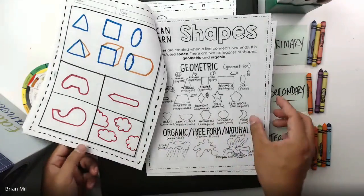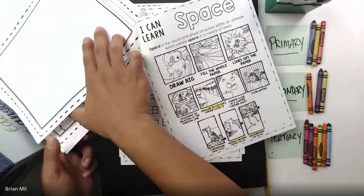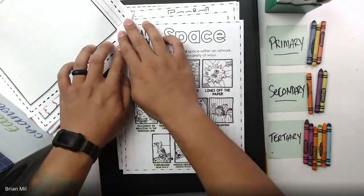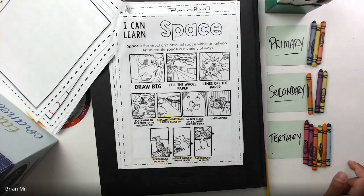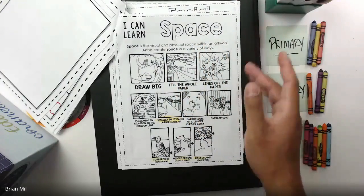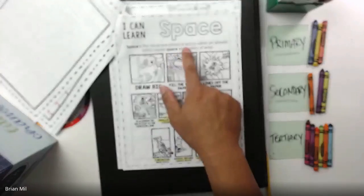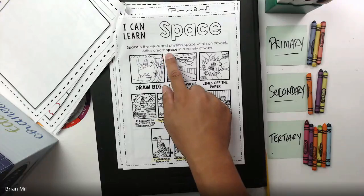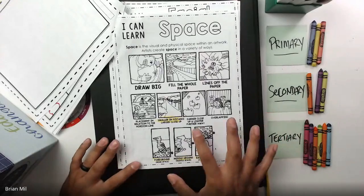What we're going to do today is flip over to the next page. It should say 'I can learn space.' Flip to this page right now. I'm going to talk about every single one of these in detail and slowly so you guys can understand what's going on. Space is one of the seven elements of art. Space is the visual and physical space within an artwork, and artists create space in a variety of ways.